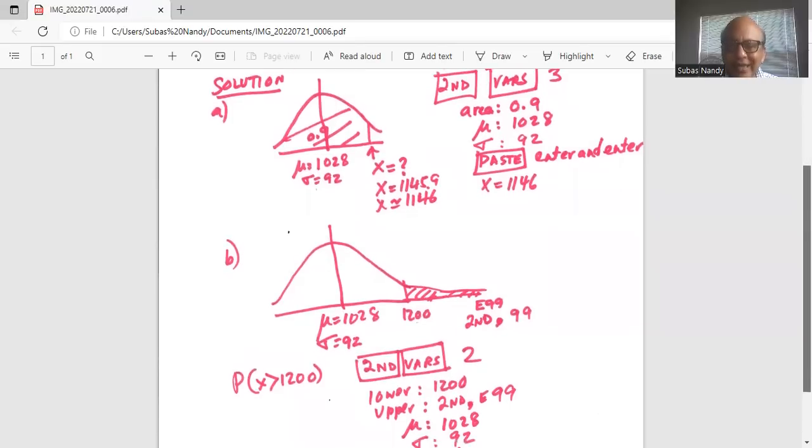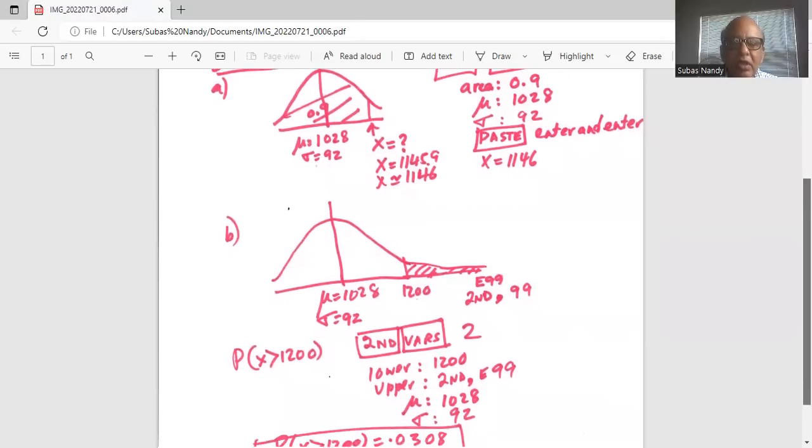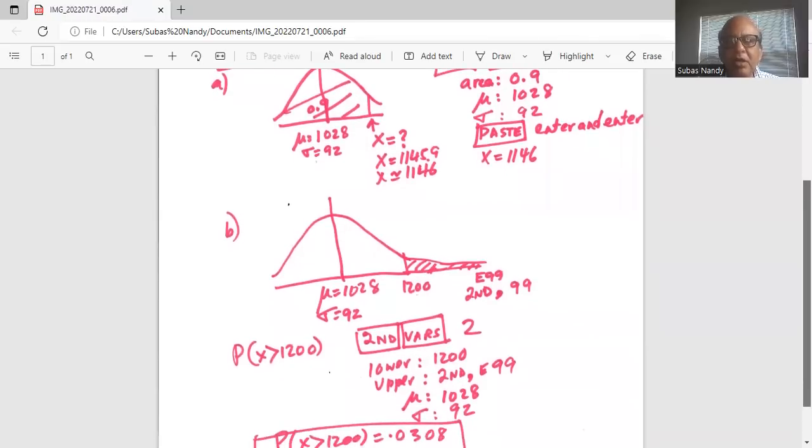So, we press the second key, then VARS key, then 2, which is normalCDF. Okay, my lower boundary is 1200. My upper boundary is a very large number, which I will indicate by E stands for exponent 99.